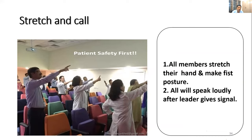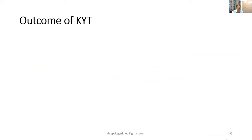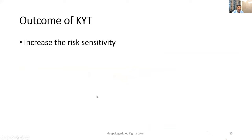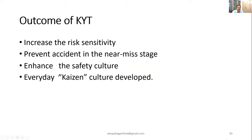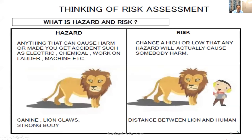The outcomes of KYT are: increased risk sensitivity so people become aware of risks; prevention of accidents at the near-miss stage — for example, catching a wrong medicine before it is administered; enhanced safety culture in each area; and the development of a kaizen, or continuous improvement culture.